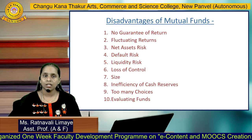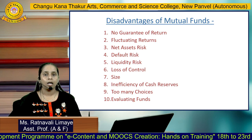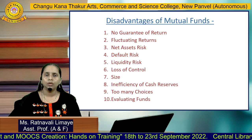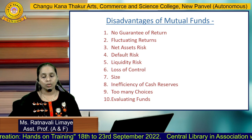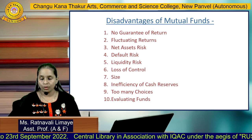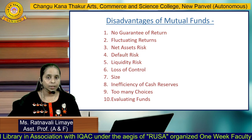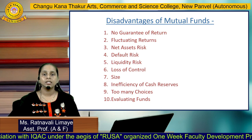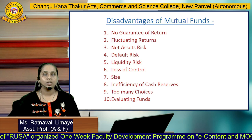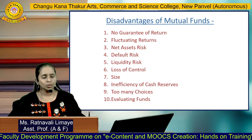There are some disadvantages as well. There is no guarantee of return — even with high regulations, mutual funds also invest in equities where returns are not guaranteed, so returns fluctuate in those schemes. There are other risks too, such as net asset risk, default risk, and liquidity risk. There may also be a loss of control, inefficiency of cash reserves sometimes, and with too many choices available, the choice of investment may go wrong. Evaluating the funds also becomes a tedious task sometimes.